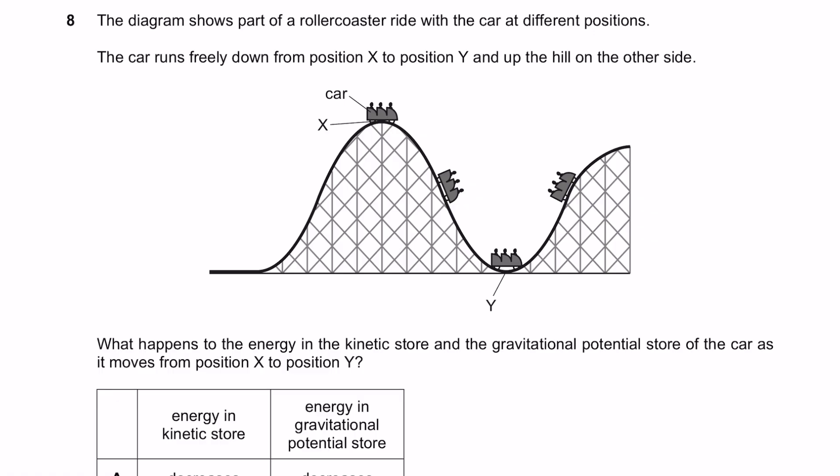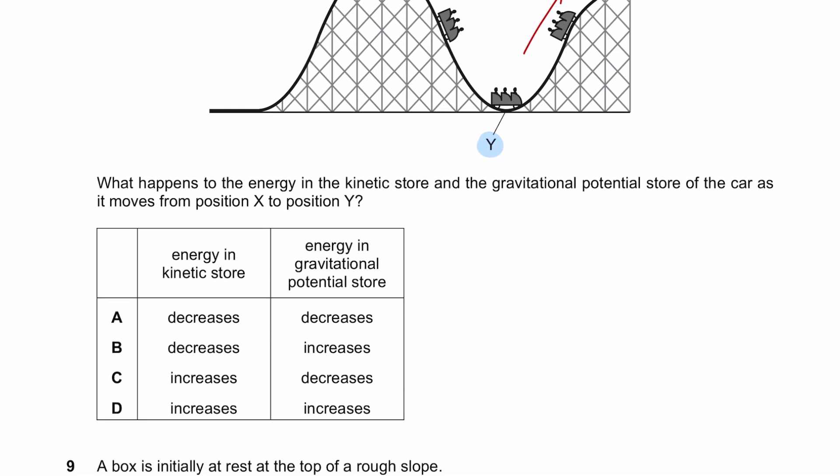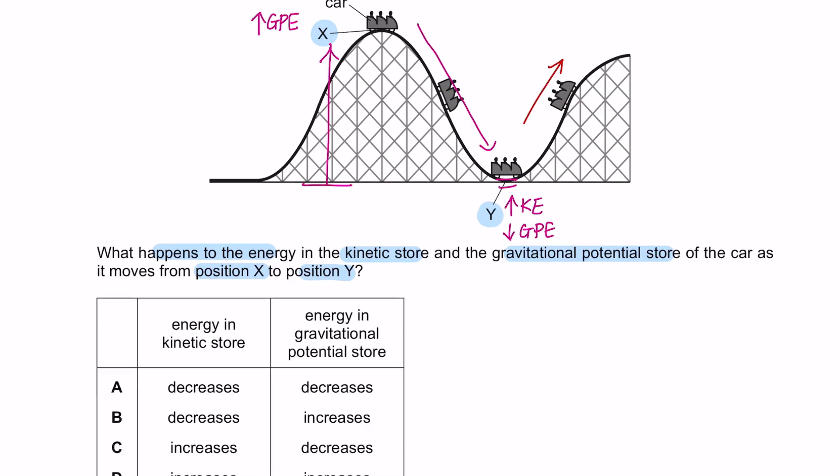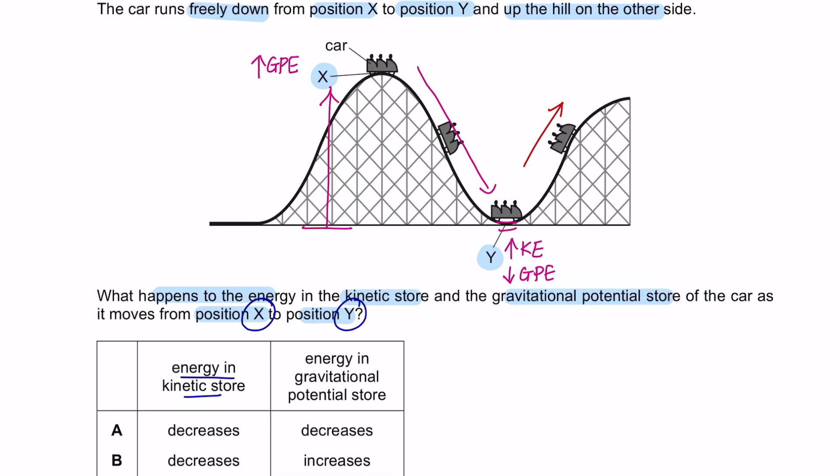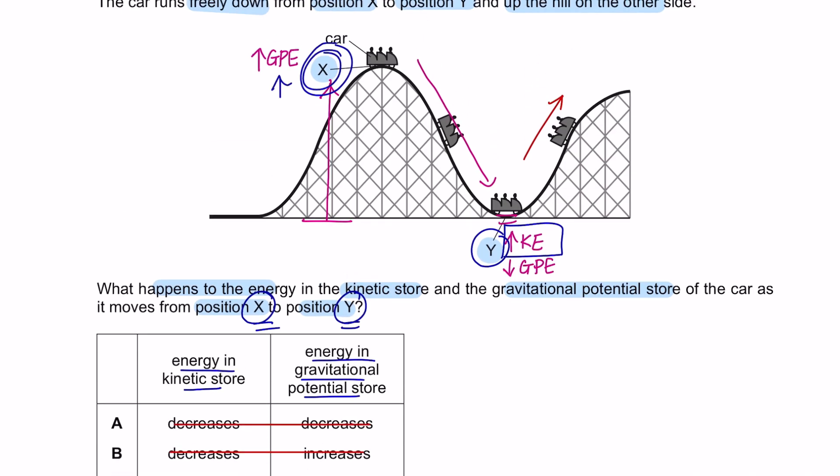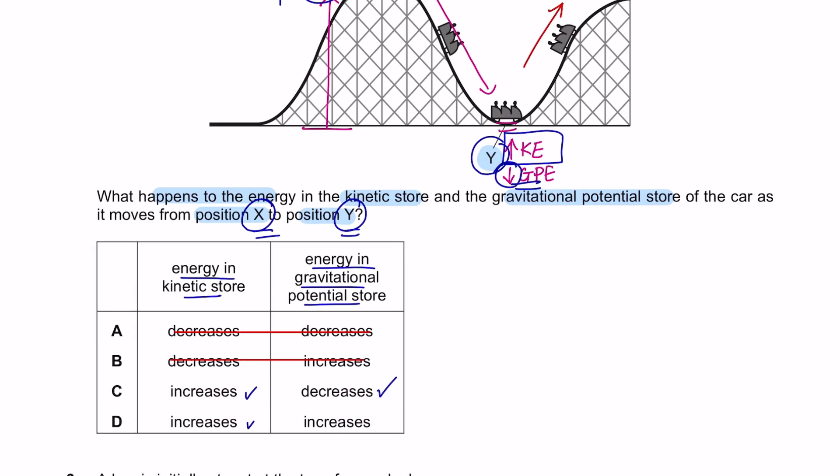Question 8. The diagram shows a part of roller coaster ride with the car at different positions. The car runs freely down from position X to position Y and up the hill on the other side. What happens to the energy in the kinetic store and the gravitational potential store of the car as it moves from position X to position Y? Position X is above the ground. This means that it has the highest gravitational potential energy and as it goes down the hill, at this position it will have the highest kinetic energy and the lowest gravitational potential energy. So the energy in the kinetic store from X to Y has increased. So the answer is either C or D. And the energy in gravitational potential store from X to Y, at X it was the highest and at Y it was the lowest. So the answer is decreases, giving us C.